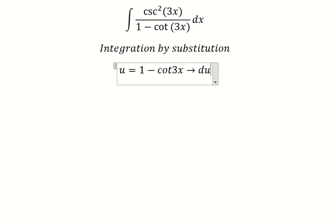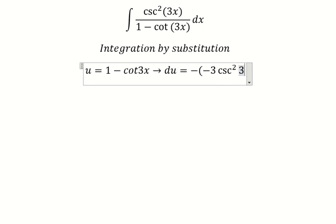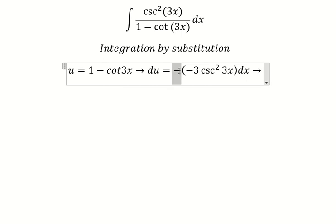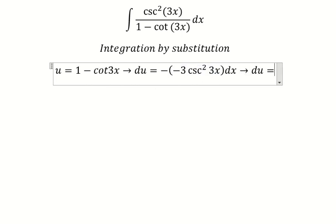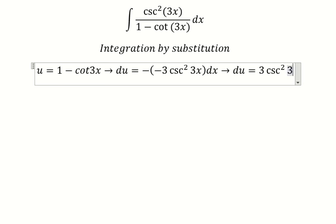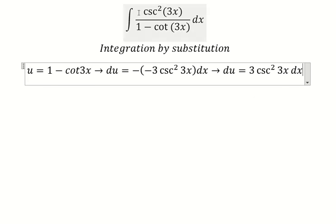Take the derivative for both sides. This one is a constant, so you get zero. This one we have negative 3 csc²(3x) dx. Because negative and negative, we have positive. We don't have the 3 here, so we divide both sides by 3.